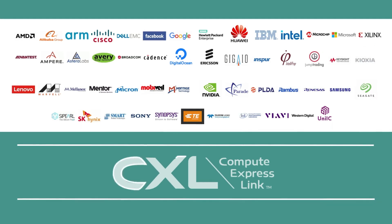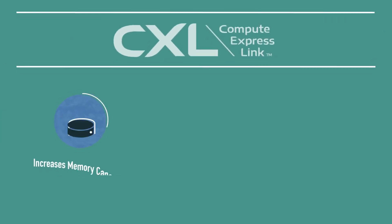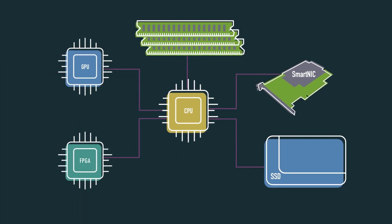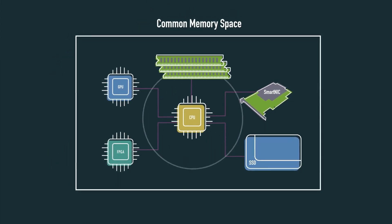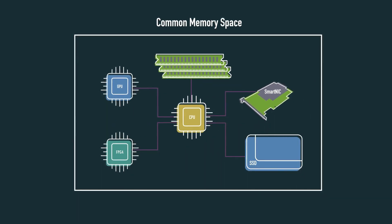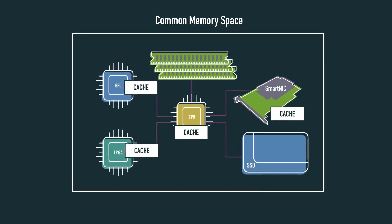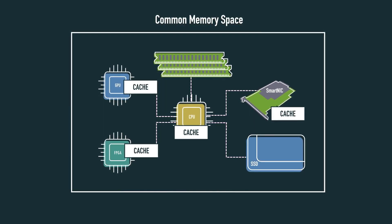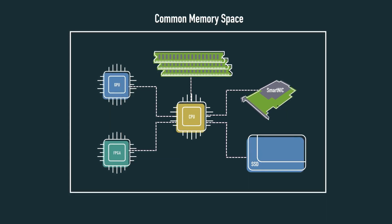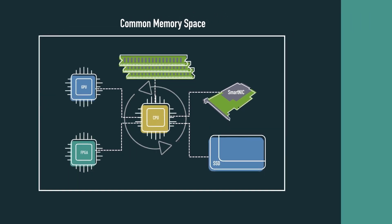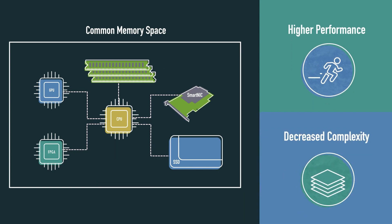Developed through a consortium of companies representing all major computer architectures, CXL is an open interconnect standard that increases memory capacity and bandwidth and enables lower latencies. It leverages the PCIe 5.0 physical layer infrastructure to create a common memory space across the host and all devices. Most importantly, CXL is a cache coherent standard which ensures that the host processor and CXL devices see the same data when they need to access it. The CPU host is primarily responsible for coherency management, allowing both the CPU and device to share resources for higher performance and decreased software stack complexity.